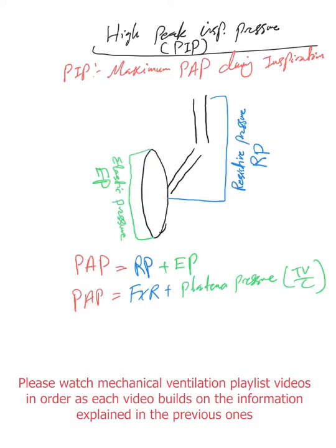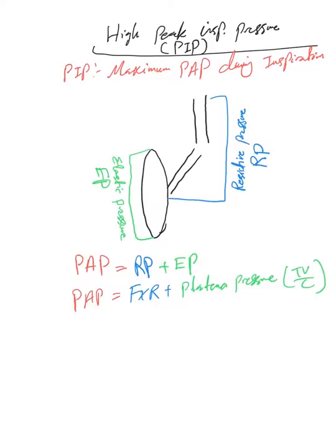Okay, the next problem we'll be facing frequently in mechanically ventilated patients is the alarm going off for high peak inspiratory pressure. It depends what threshold we put the alarm for, but usually we don't like this to be above...